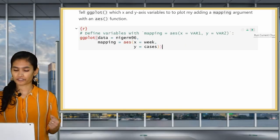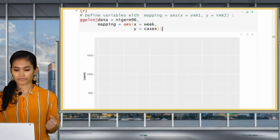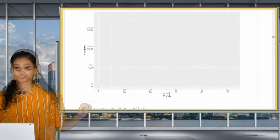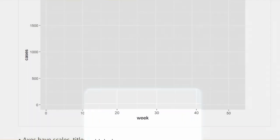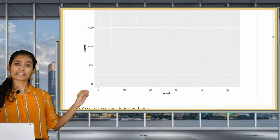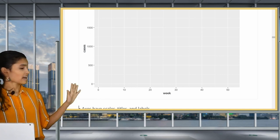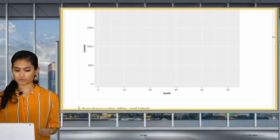So now we have two out of our three required layers. If you run this, it may look like a blank plot but it's not. You'll see that the axes are titled with week and cases, and they are also scaled. So you can see that cases ranges from 0 to almost 2,000 and week ranges from 1 to about 52 for the 52 weeks of the year.